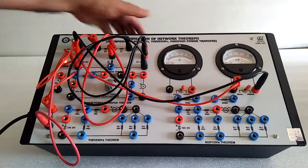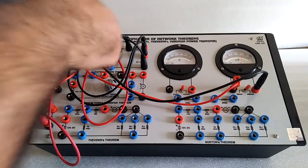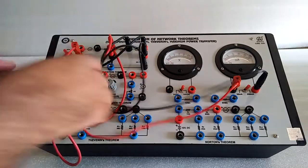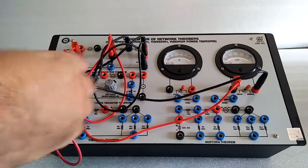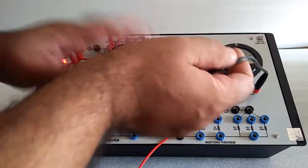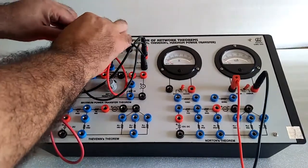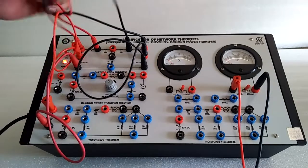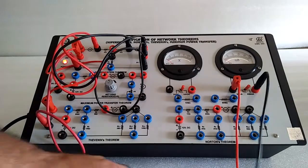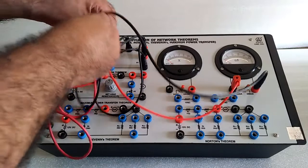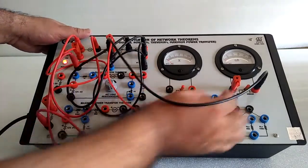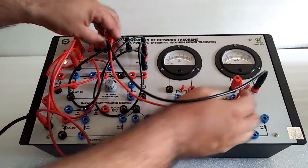Now for the second branch current, we have to disconnect current, short this VIN ampere and here.